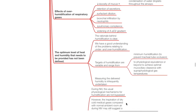The optimal level of heat and humidity that needs to be provided has not been defined. The rationale behind humidification of inspired gases is clear and we have a good understanding of problems related to under- and overhumidification. Targets of humidification are variable and range from minimal humidification to prevent tracheal tube occlusion to physiological equivalence or beyond, to achieve optimal mucociliary clearance with supraphysiological gas temperatures. Measurement of delivered humidity is also infrequently undertaken.